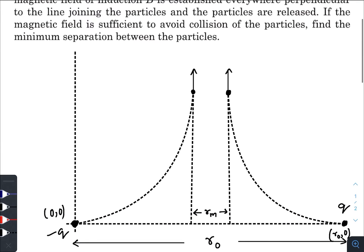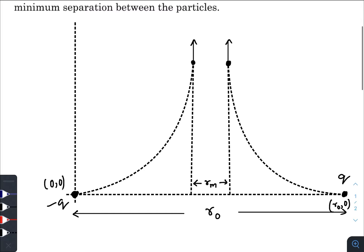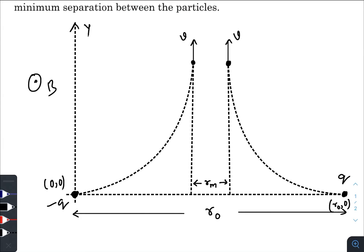I have already drawn the diagrams to save time. In this diagram we have two particles which were initially separated by a distance r-naught, of unlike charges but same magnitude. The magnetic field is present coming out of the screen. In the case of minimum separation, the direction of velocity will only be in the vertical or y-direction. Let that speed be v, and as both charges have the same mass, the motion will be symmetric in nature.